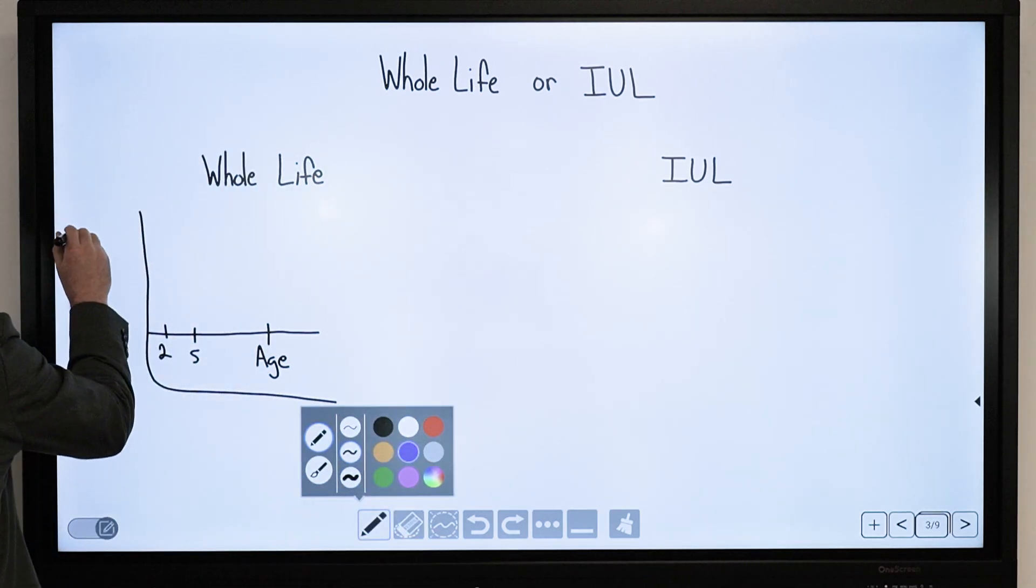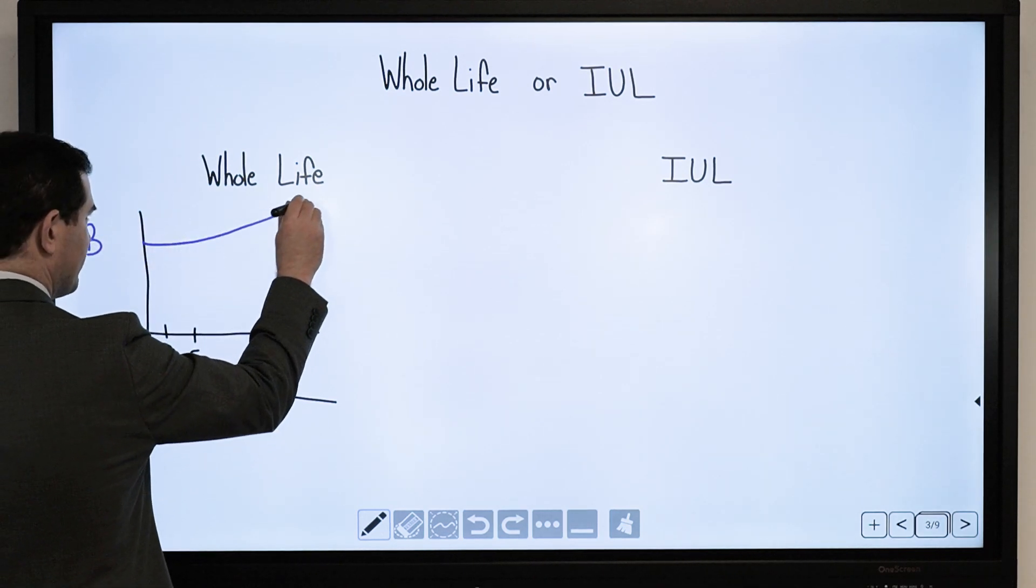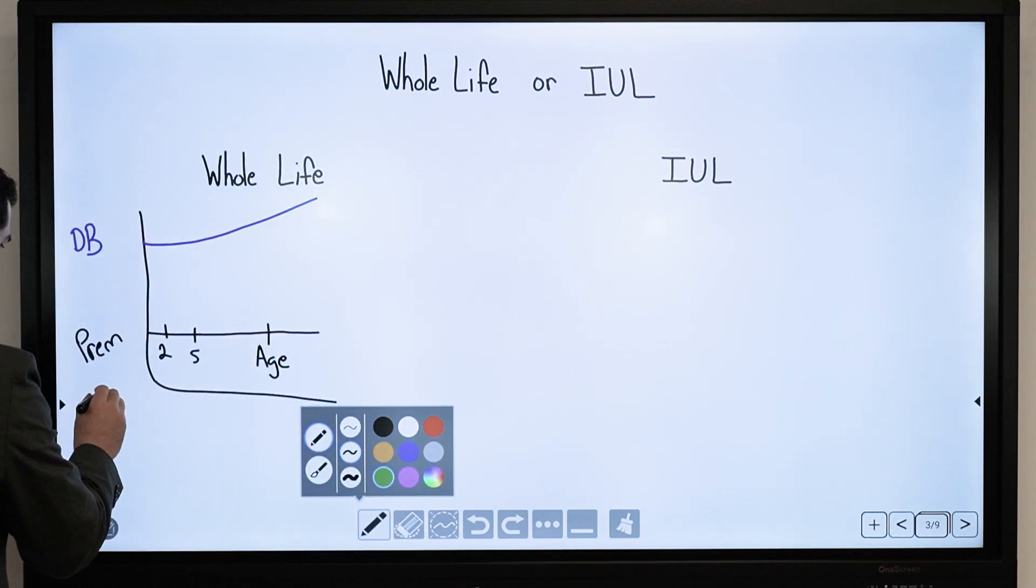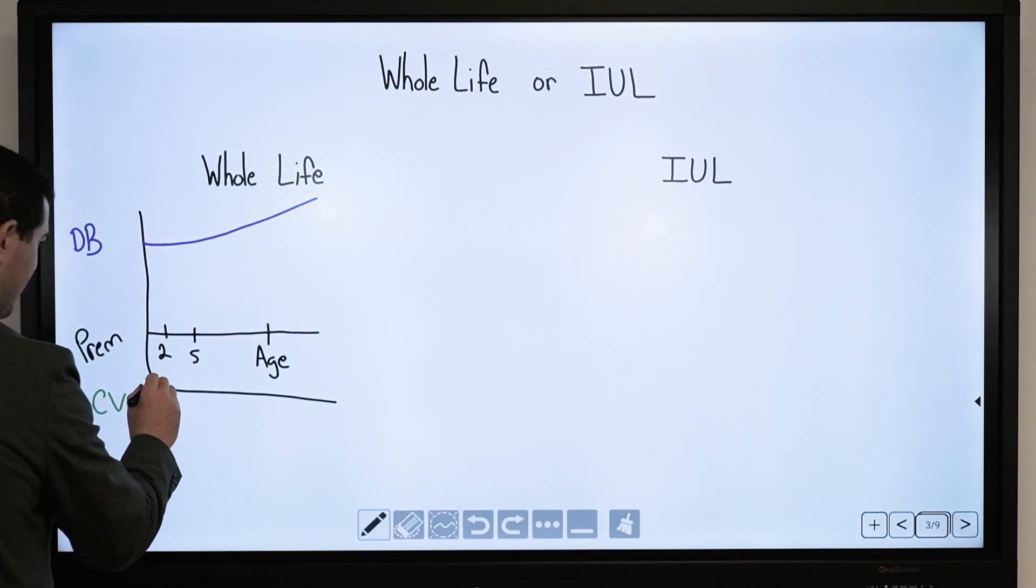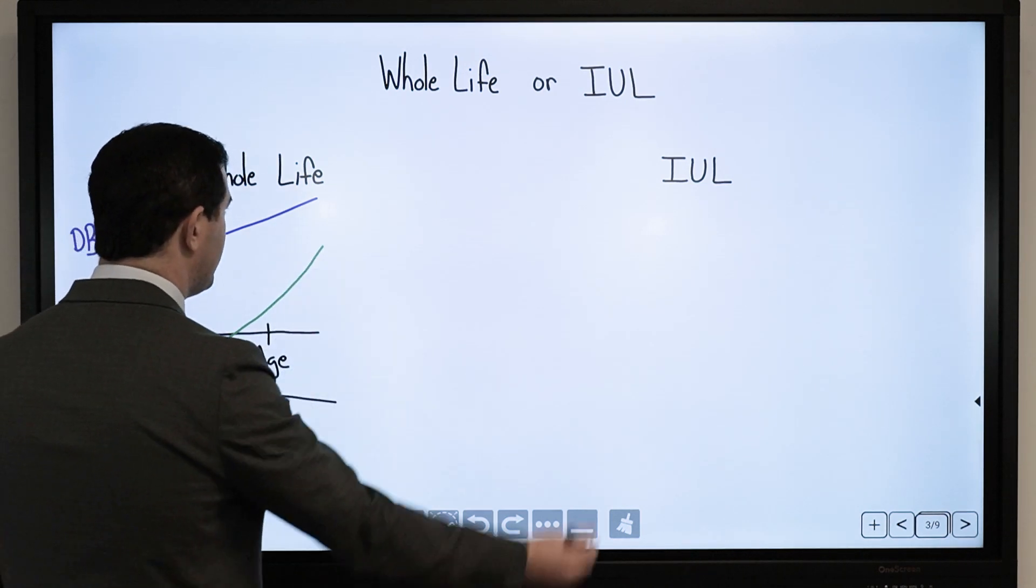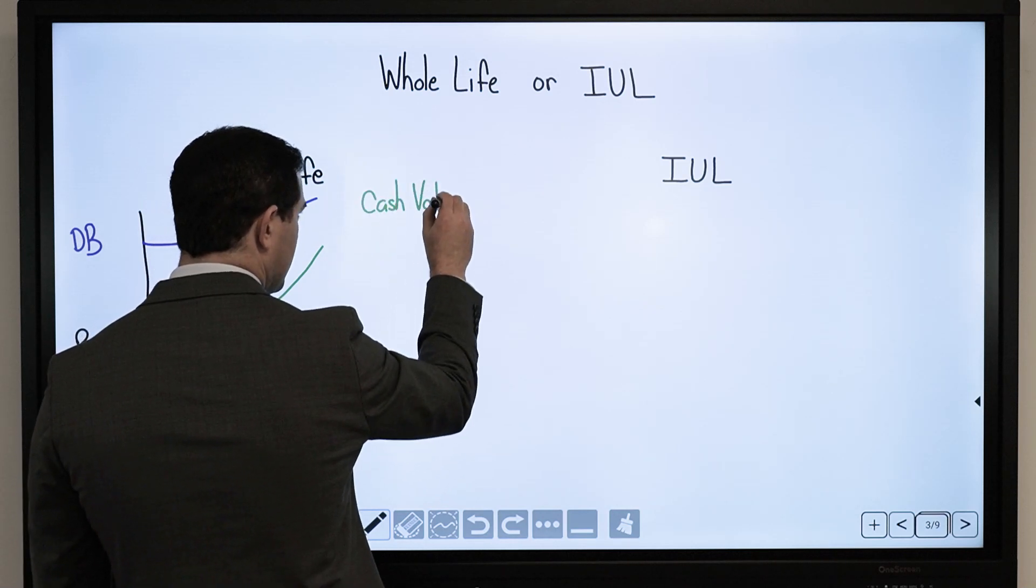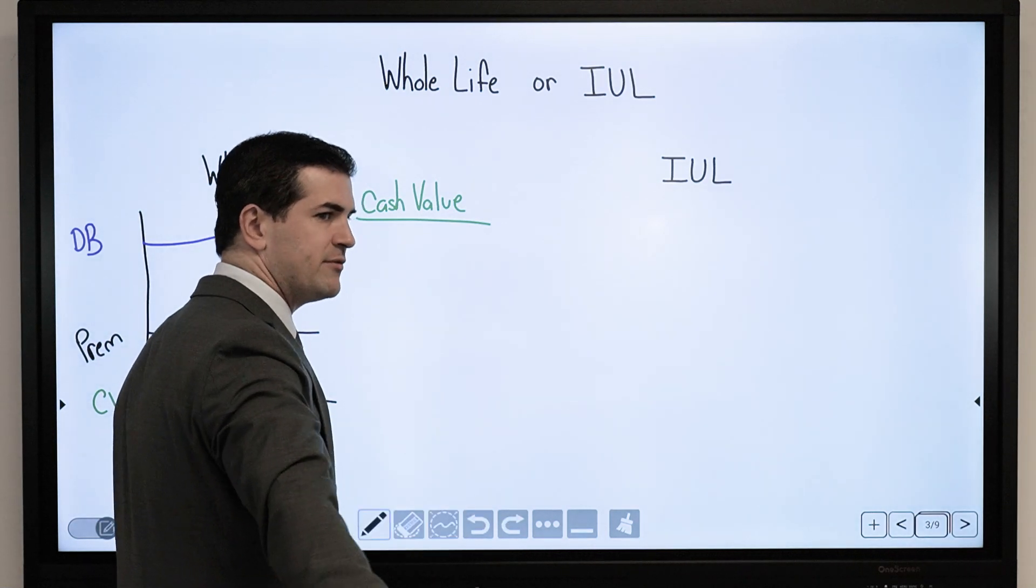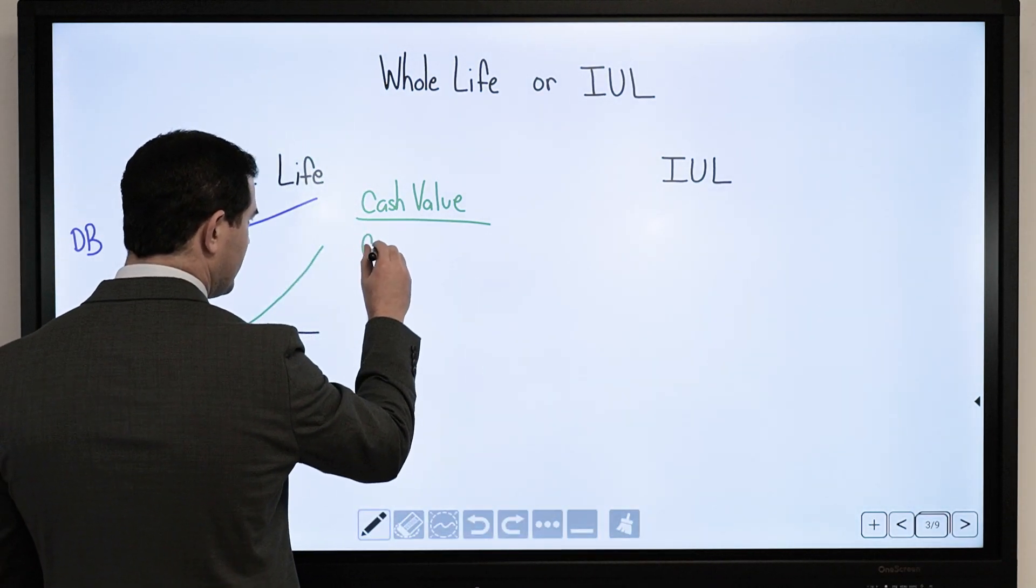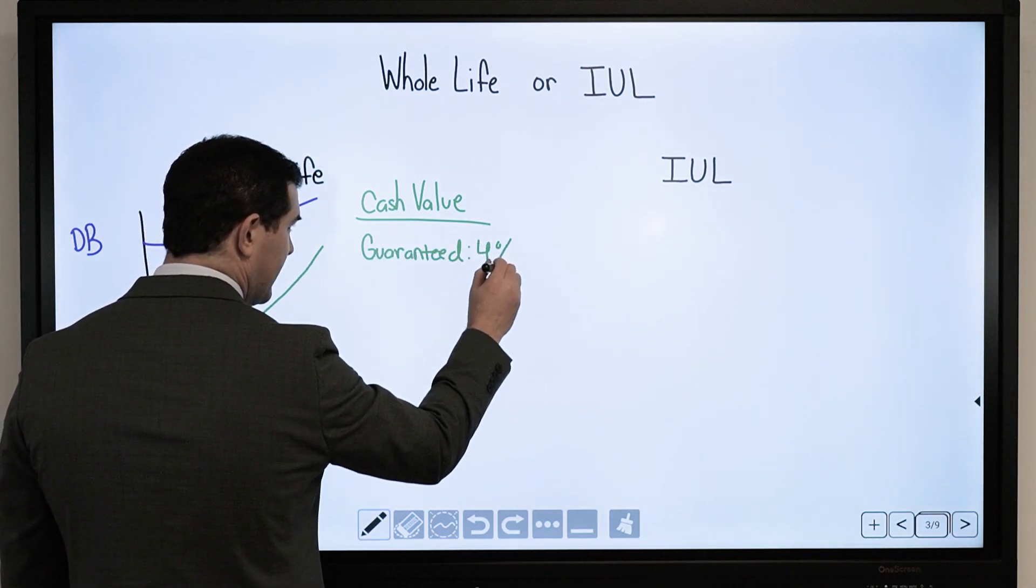We have a death benefit that will typically gradually increase over time. Death benefit proceeds are always paid out income tax free. And then we have cash value which will go nowhere but up over time. How the growth is driven is not based off of the stock market in any way. We have a guaranteed rate or floor.